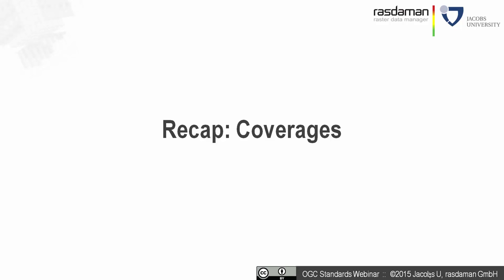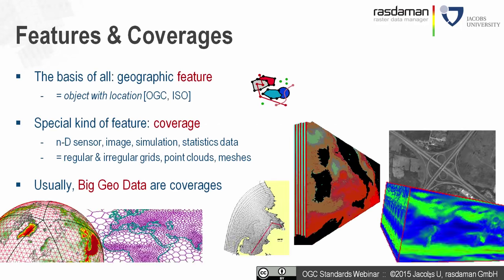As a brief refresher: a coverage is a special kind of feature — a geographic object — that resembles sensor, image, simulation, and statistics data. We represent those as regular and irregular grids, point clouds, or meshes. The whole thing is n-dimensional: from 1D sensors to 2D images, 3D image time series and voxel data, 4D climate datasets, etc. The big geodata are indeed coverages in the GeoWorld.